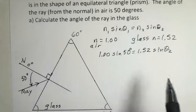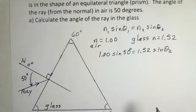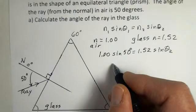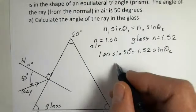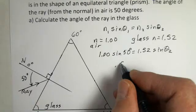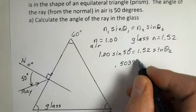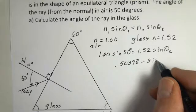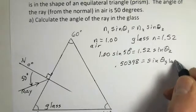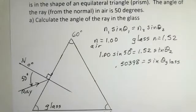You should pause, use your calculator, and see if you agree with me at the end here. But 1 sine of 50 degrees divided by 1.52. 0.50398 is equal to sine of theta. And I'm going to go ahead and label glass, the angle inside the glass.